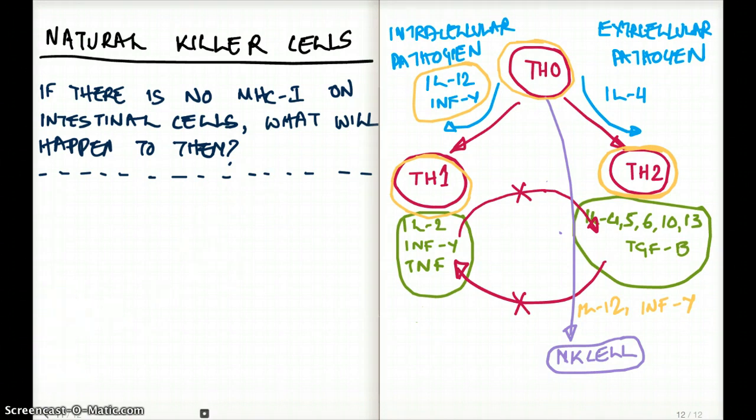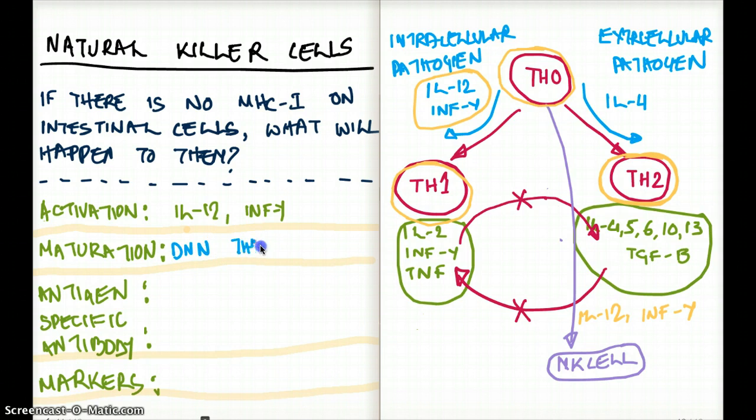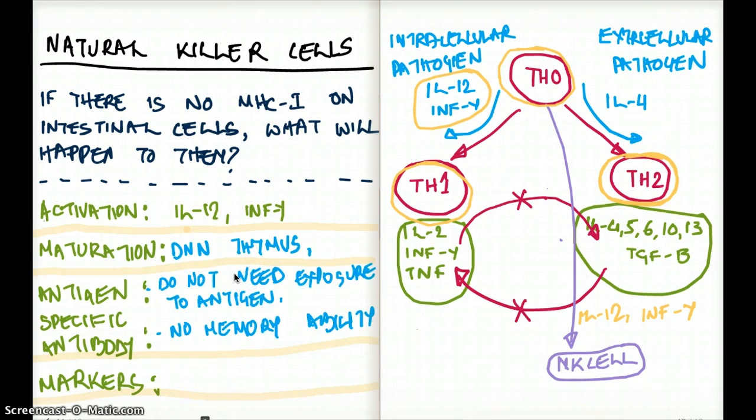Now, let's talk about, now we already talked about the activation of natural killer cells. They're activated by IL-12 and interferon gamma. Same activation for T helper 1 cells. What about maturation? It do not need thymus. So maturation do not need thymus, do not need intracellular pathogen. It does not need an intracellular pathogen for it to mature. So they do not need thymus for maturation. They do not need exposure to an antigen for it to proliferate or for it to be produced. And they have no memorability.